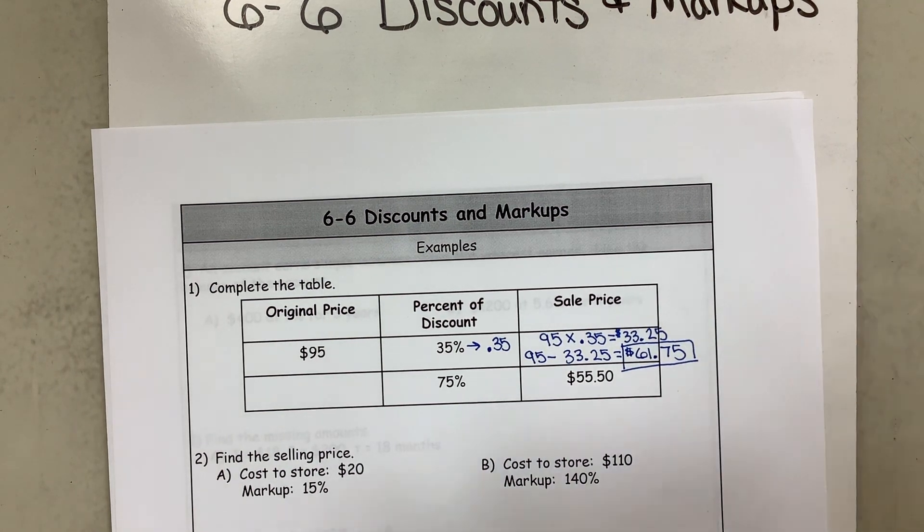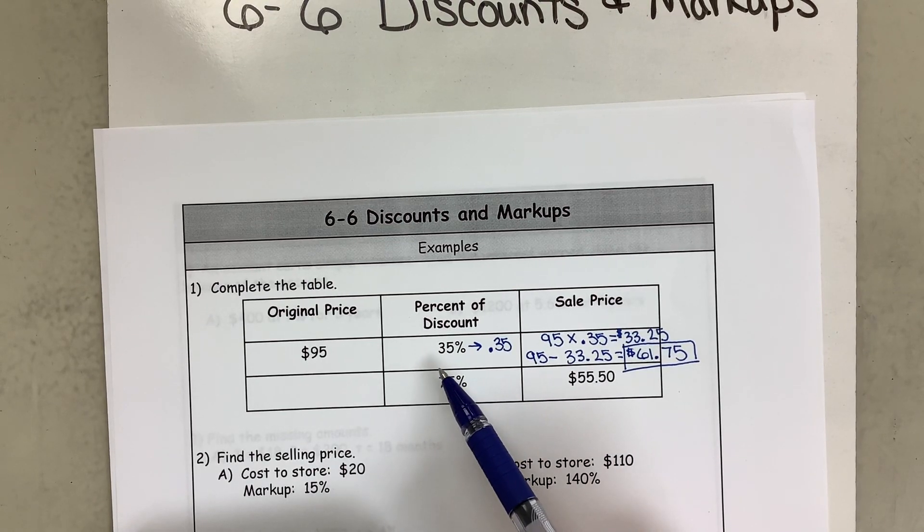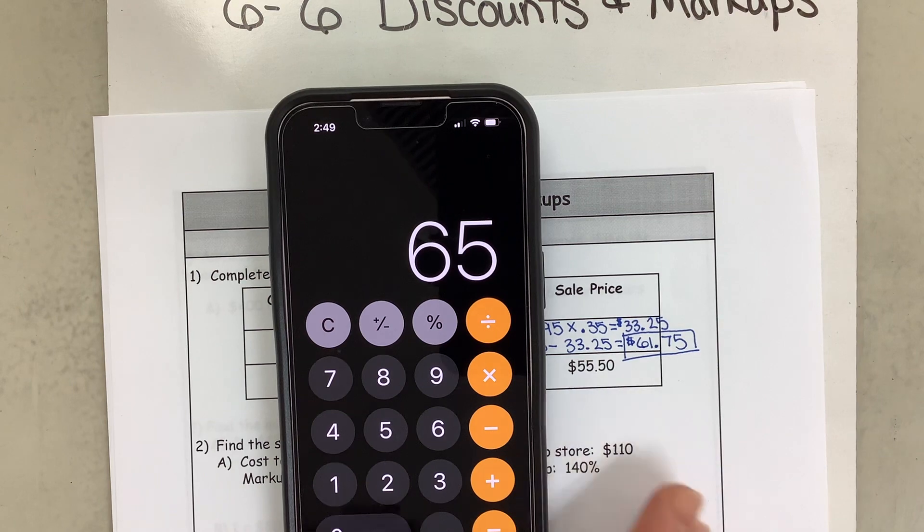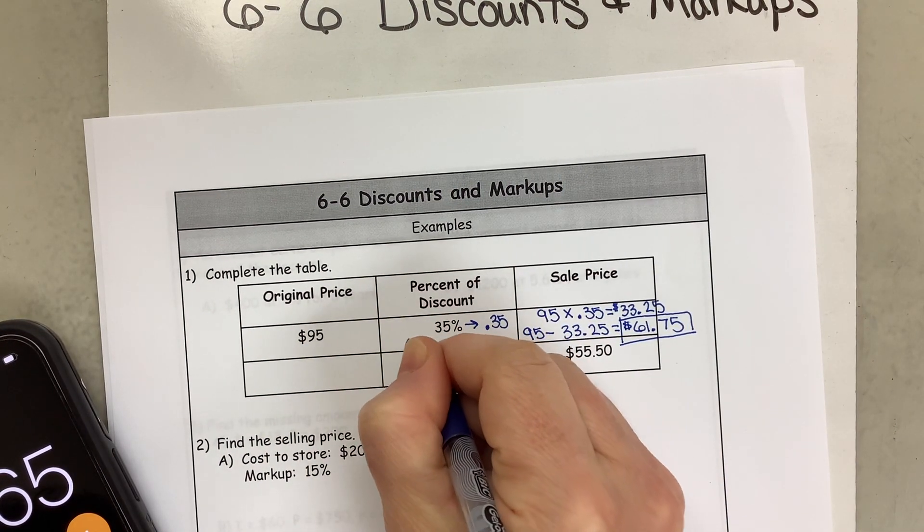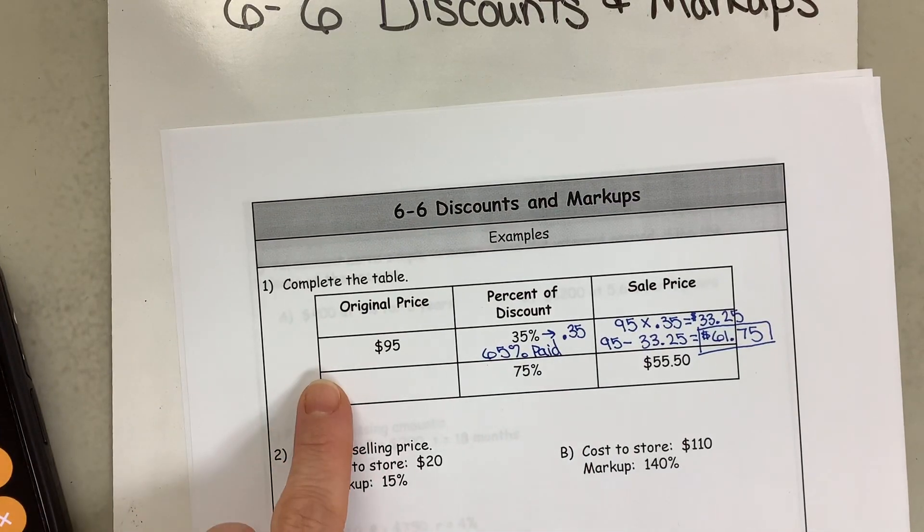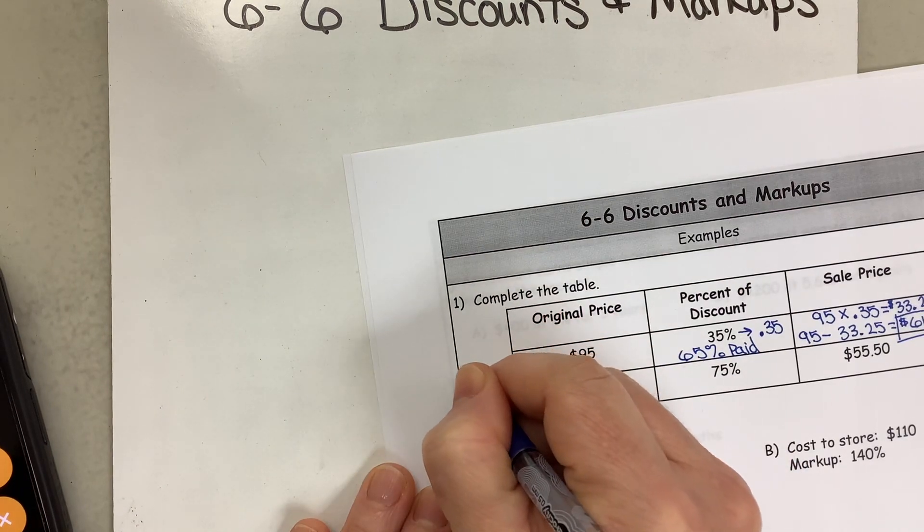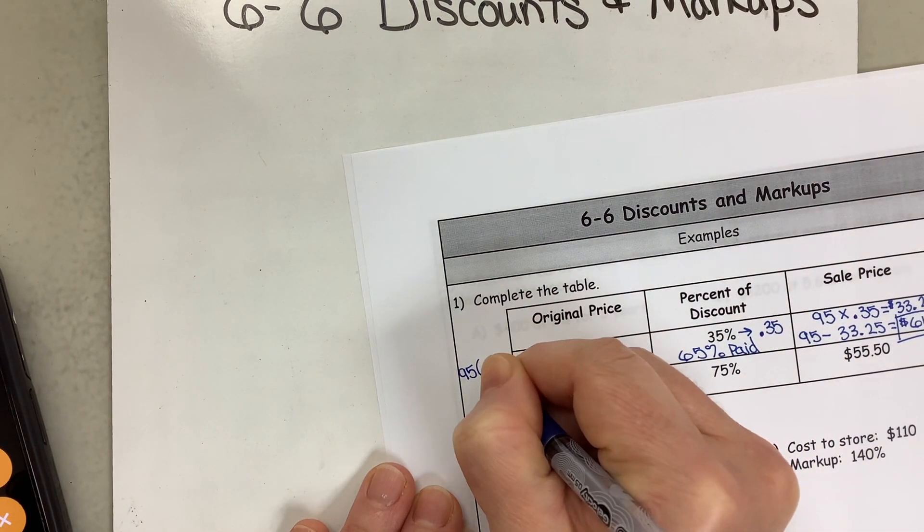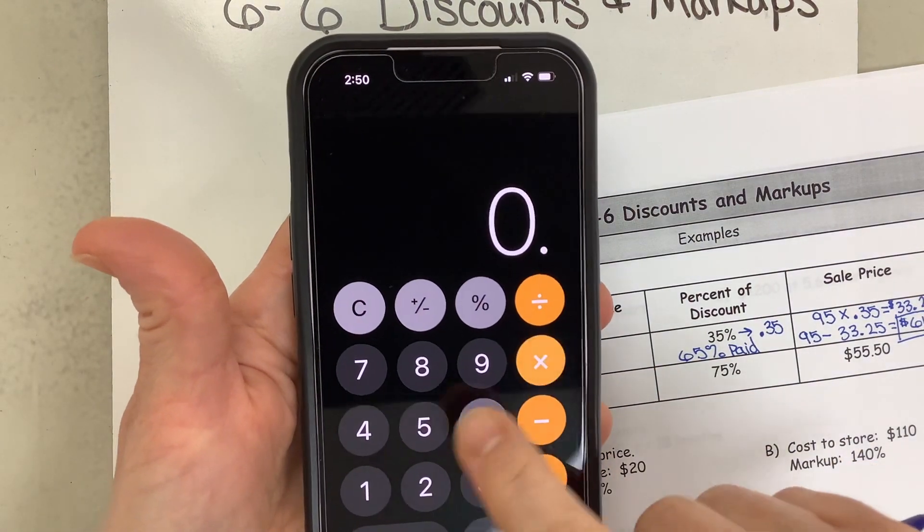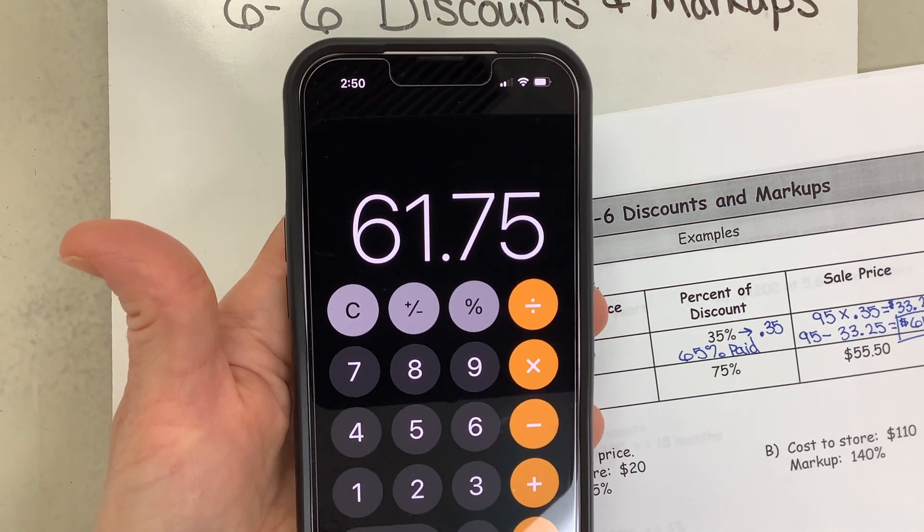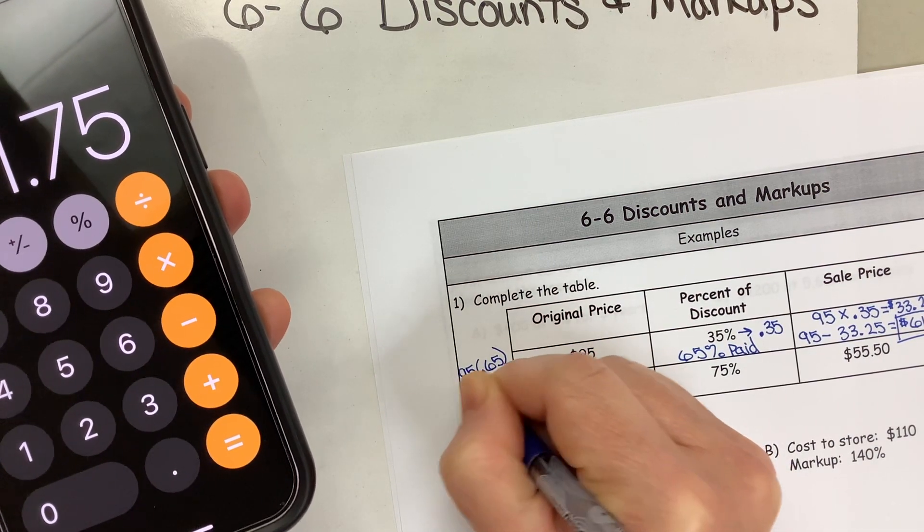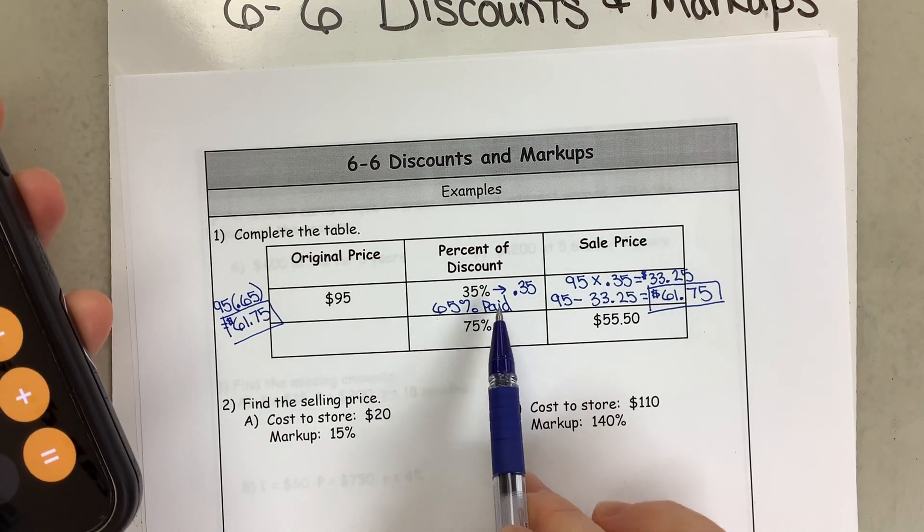Now a different way to do it would be if 35% is the discount, how much did you actually pay? Well, take 100 minus 35 and you paid 65%. This is what you actually paid. So what you could have done was taken, and I'm going to write it over here, 95 times the 0.65, the 65% you paid. And when I do that, so let's do 95 times 0.65, then I find that I am paying $61.75.